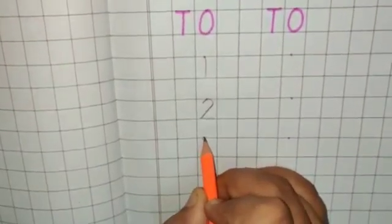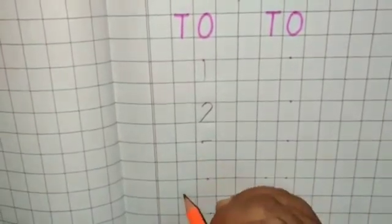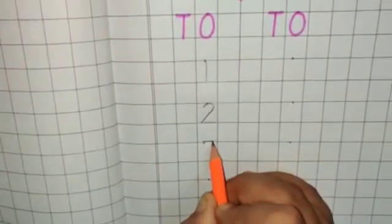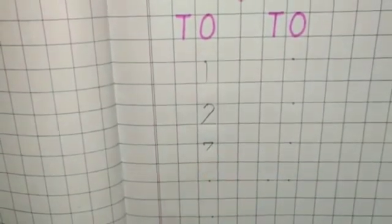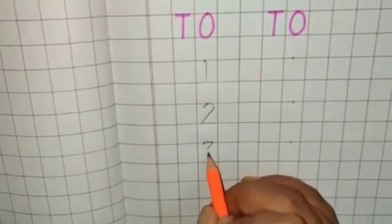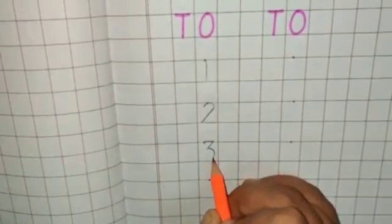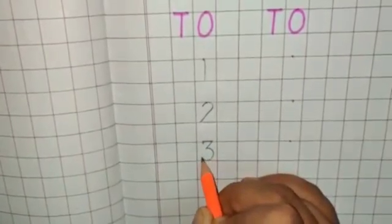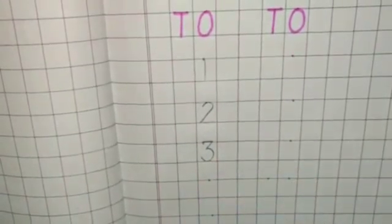For number 3. First of all we will make a slipping line. Then at the end of the slipping line we will make a slanting line and then we will make a curve like this. Very nice. This is number 3.